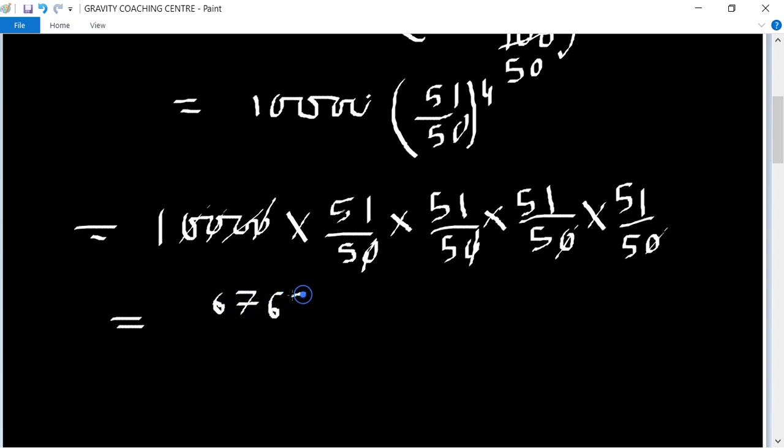So we have 6,765,201 upon 625, which equals 10,824.32.